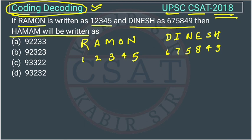The question asks how the word HAMAM will be written. From the given data, we can see that R is coded as 1, A is coded as 2, and N is coded as 5 — and N is also coded as 5 in DINESH, confirming a fixed code is assigned to each letter. So A has a fixed code of 2, N has a fixed code of 5, and similarly for all other letters.